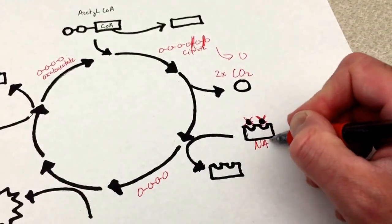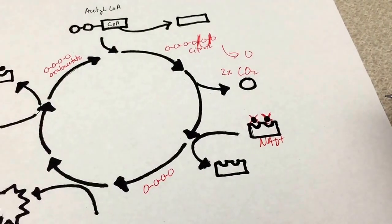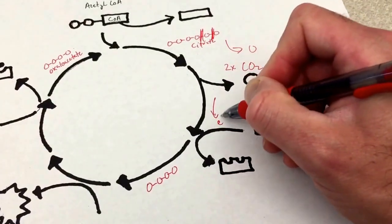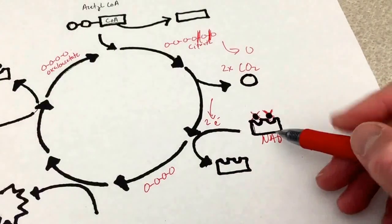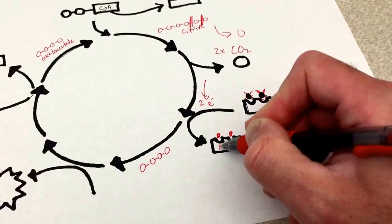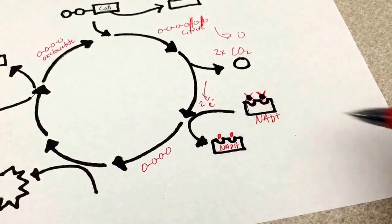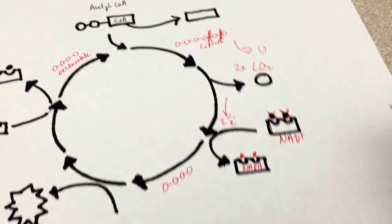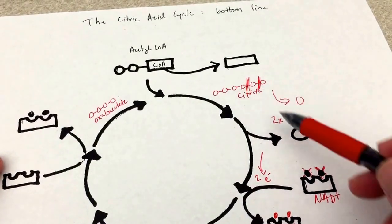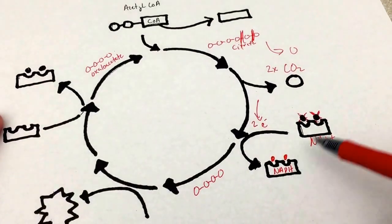This is supposed to be NAD+. The electrons go to NAD+ and they reduce NAD+ into NADH. Don't forget that whenever we cut off these carbons we can load those electrons onto NAD+ and reduce it to NADH.